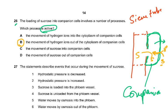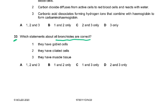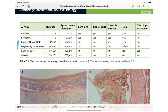Difficult question 33: which statements about all bronchioles are correct? The answer is D — all bronchioles have no goblet cells, they have ciliated cells, and they have smooth muscle tissue. It is critical to remember the table from the Cambridge International AS and A Level Biology course book: both terminal and respiratory bronchioles lack cartilage and goblet cells but do have smooth muscle and cilia. Because the question says 'all bronchioles,' you must apply what is true for both types.